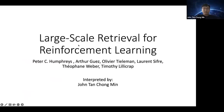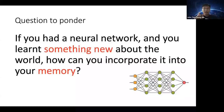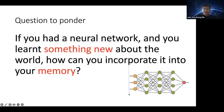Before we begin the paper review, let's think about this question: imagine you are a reinforcement learning agent with a neural network that takes some inputs and produces some outputs. If I were to give you a new example — say all along you've been going to the science canteen and there's no chicken rice there, but suddenly one day you walk in and see a chicken rice store — it has some associated reward or value. How can you incorporate that single observation into your memory if you were a neural network?